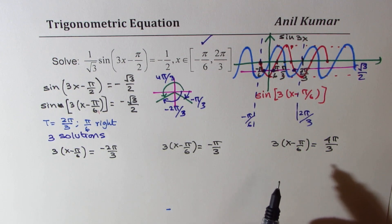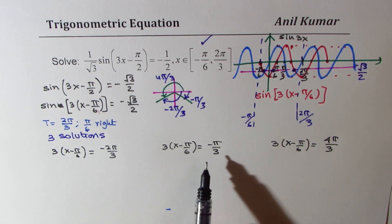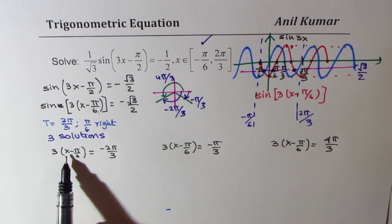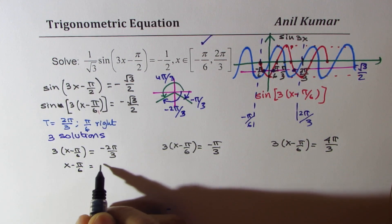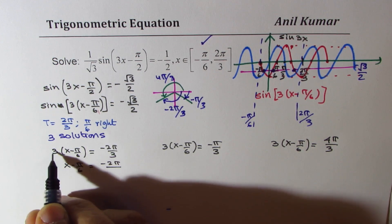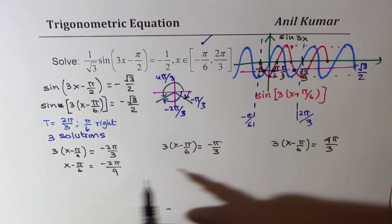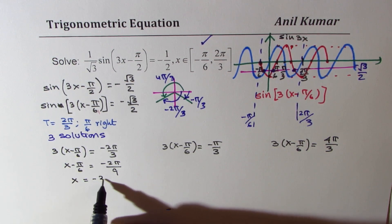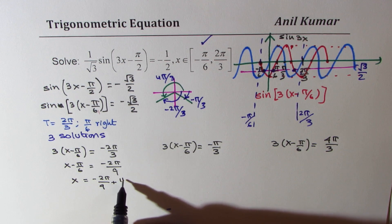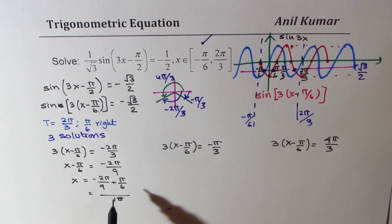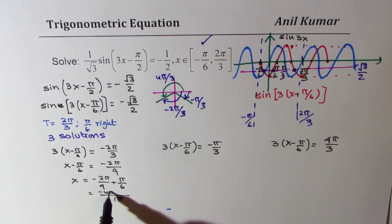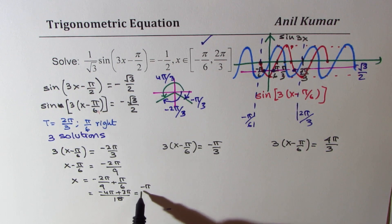Now we need to solve for x to get the right answer. Let's isolate x. We get x minus pi by 6 equals minus 2 pi by 9. So x equals minus 2 pi by 9 plus pi by 6. Taking 18 as common denominator, multiplying by 2 we get minus 4 pi, and by 3 we get plus 3 pi. So one solution is minus pi by 18.